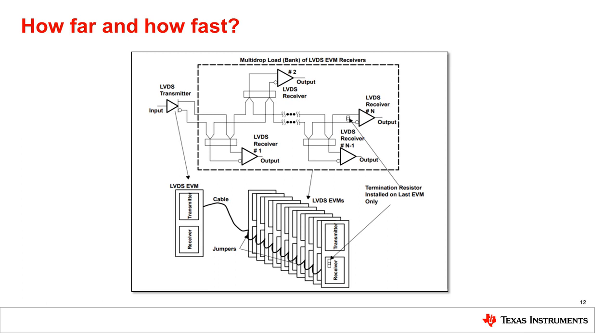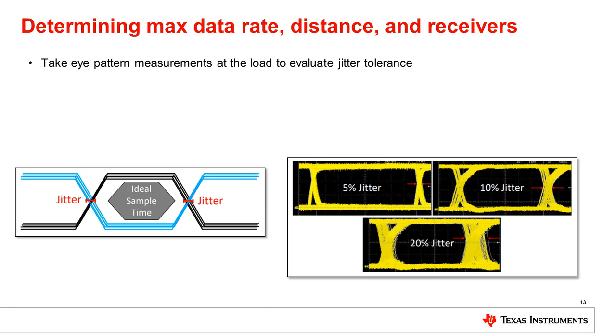It's best to test the system with a prototype, or simulate the system in an application environment. With a prototype setup, you can take eye diagram measurements at the load to determine the max amount of jitter allowed for error-free transmission. You can also use the eye diagram height to determine whether or not the 100 millivolt threshold for the receiver is being met.